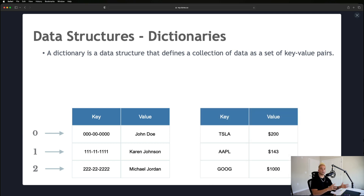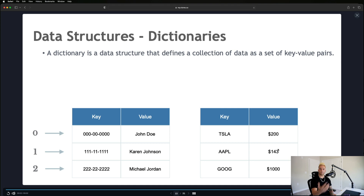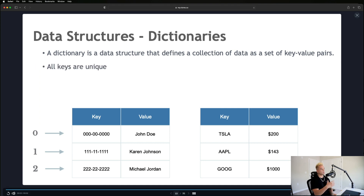Another example is a stock ticker symbol system, where each company publicly traded on a stock market has an associated ticker and an associated price. For example, Tesla would be $200, Apple $143 — you could associate the key with the company's name: TSLA is Tesla, AAPL is Apple, GOOG is Google.